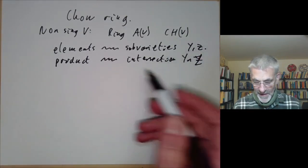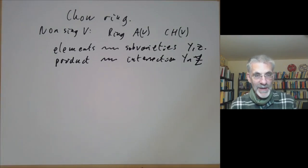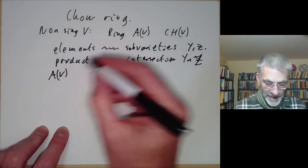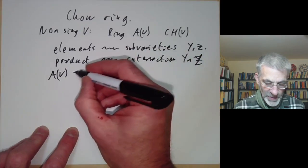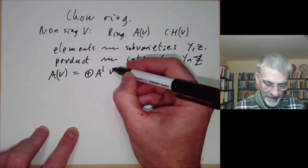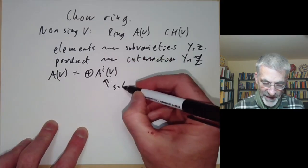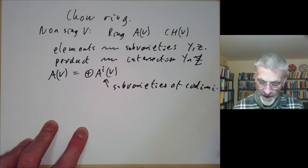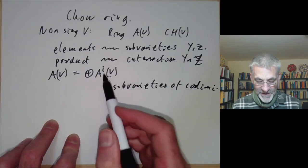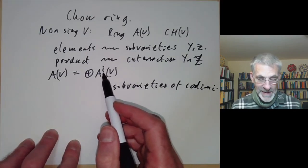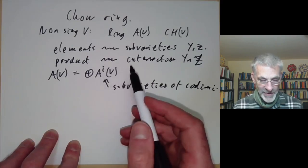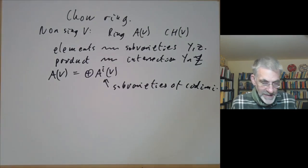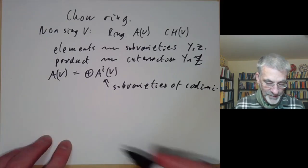There are several problems in making sense of this, and I'll try to explain what the problems are and how you fix them. First of all, if we've got this ring whose elements are sub-varieties, it ought to be graded: A of V, where A_I has something to do with sub-varieties of codimension I. It's graded by codimension, because if you take the intersection of two things of codimension I and codimension J, the intersection should usually have codimension I plus J, although it sometimes doesn't, and this is one of the complications we have to deal with.